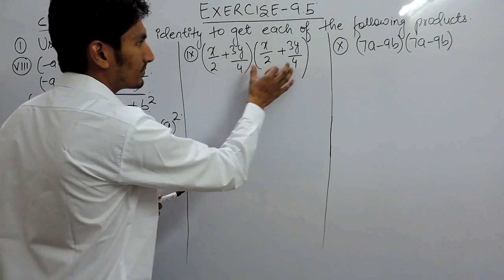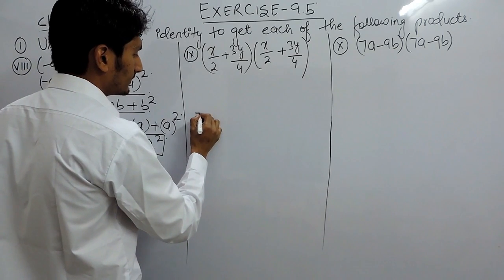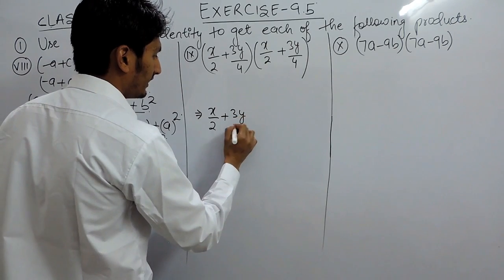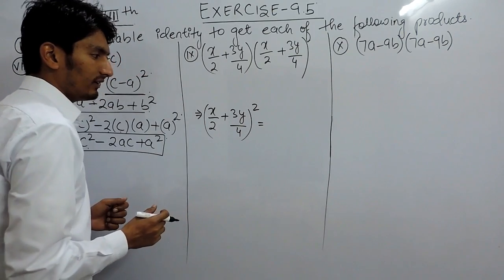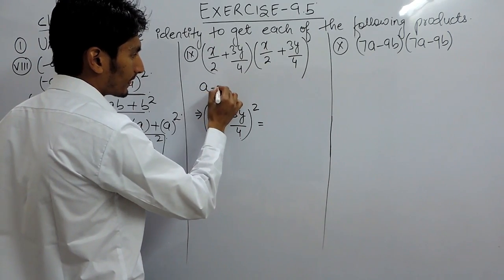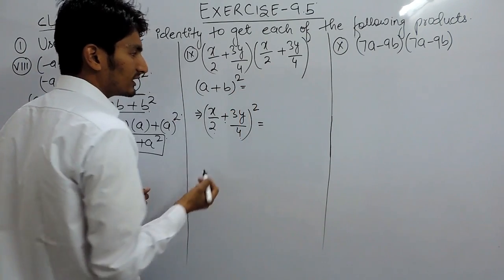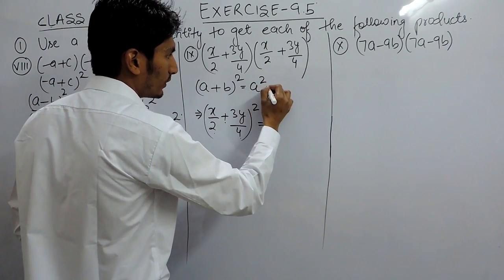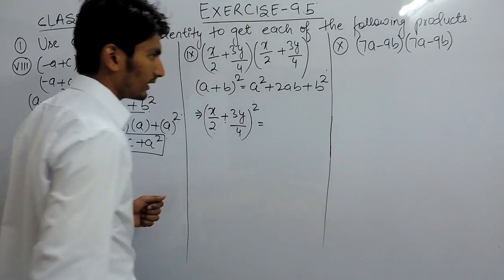Similarly, the next two terms are the same, so they can be written as x upon 2 plus 3y upon 4, whole square. Since there is a plus sign, we use the identity a plus b whole square, which expands to a squared plus 2ab plus b squared.